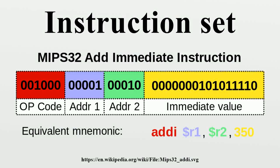An instruction set, or instruction set architecture, is the part of the computer architecture related to programming, including the native data types, instructions, registers, addressing modes, memory architecture, interrupt and exception handling, and external I/O. An ISA includes a specification of the set of opcodes and the native commands implemented by a particular processor.